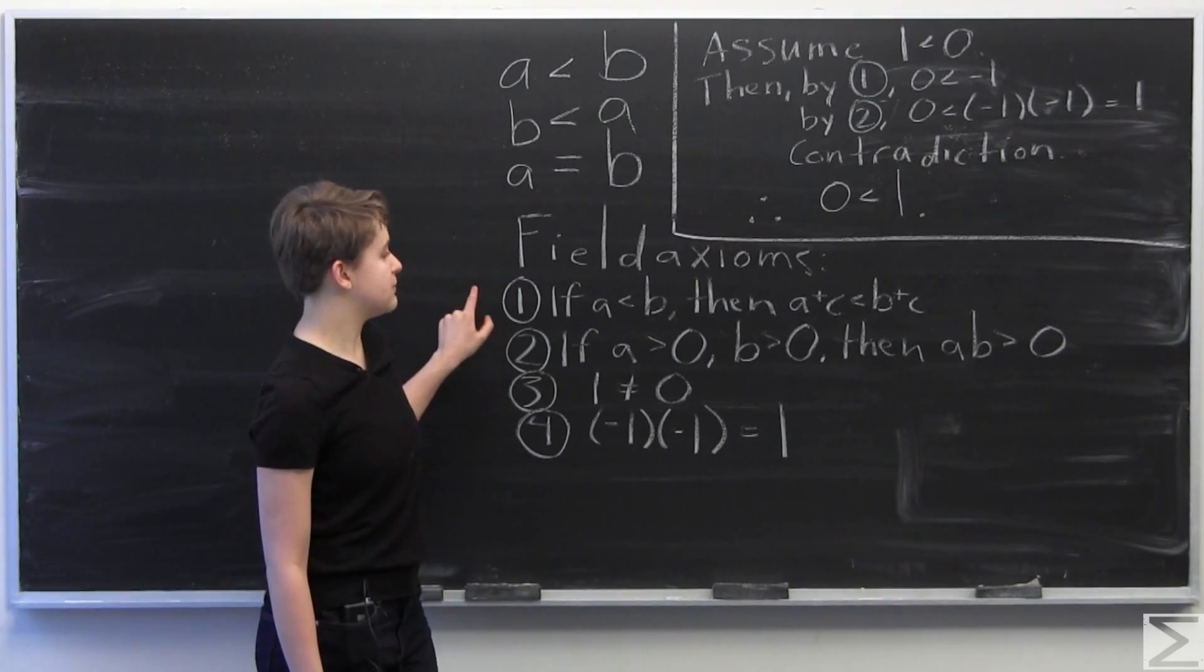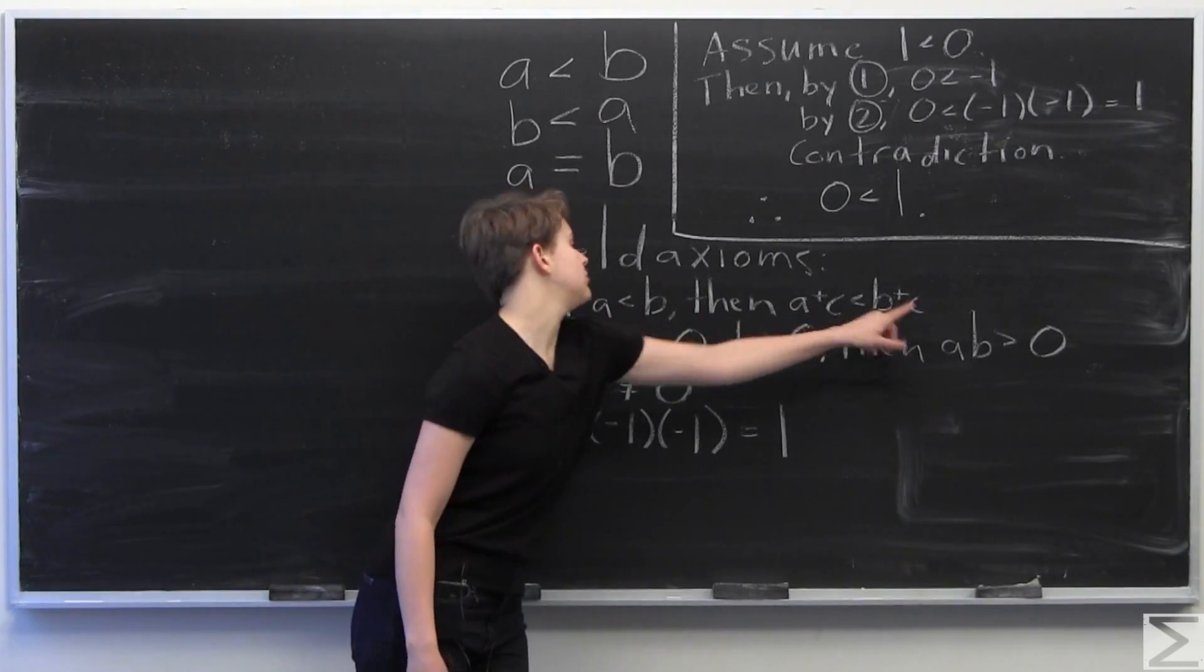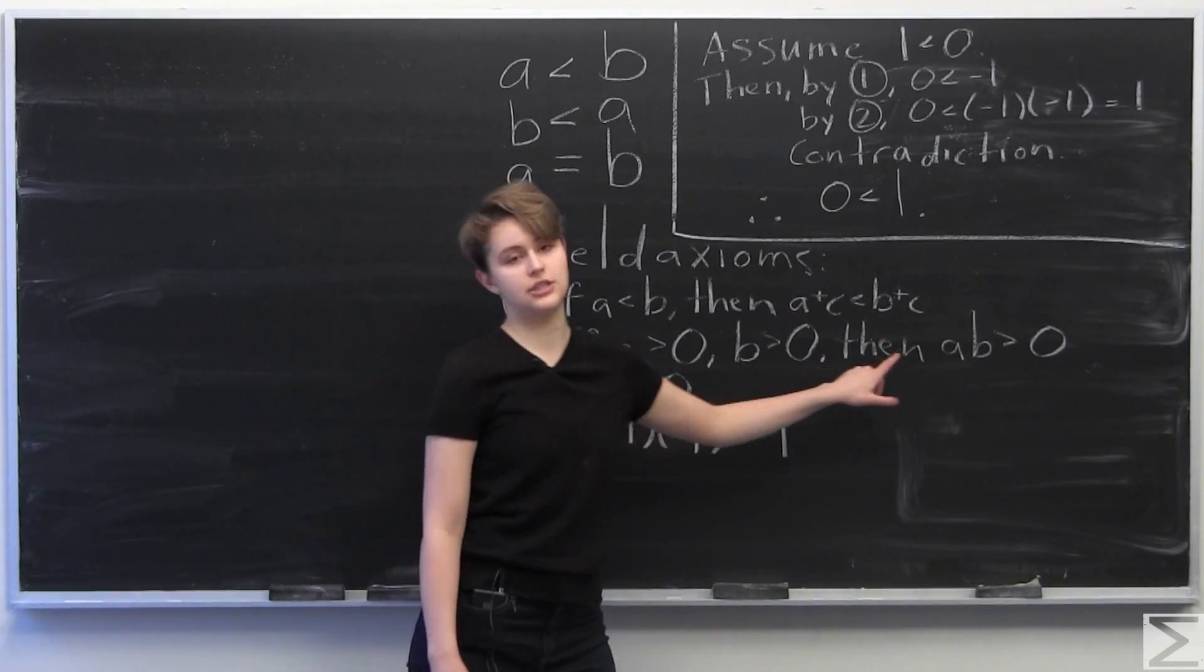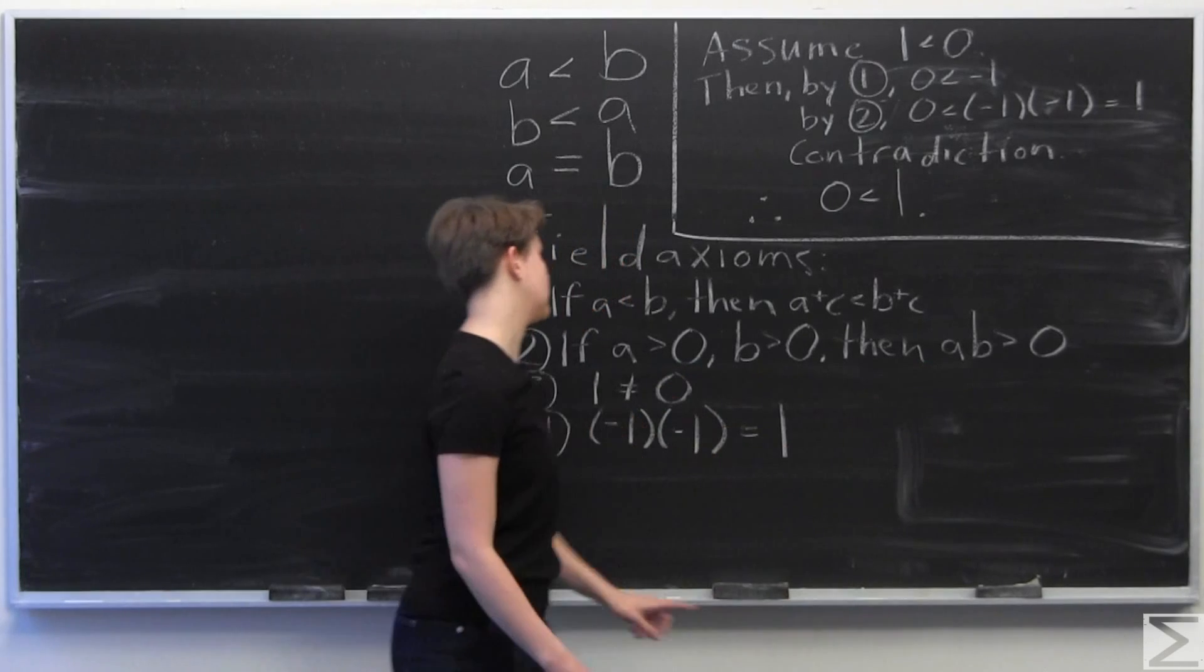So inequality is preserved under addition of a constant, which you see here, and if a is greater than 0, b is greater than 0, then a times b is also greater than 0.